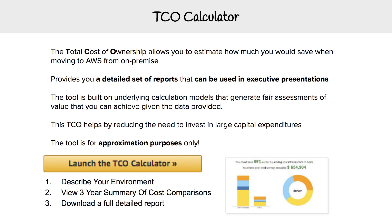Hey, this is Andrew Brown from ExamPro. We are looking at the TCO calculator, which stands for Total Cost of Ownership. This allows you to estimate how much you would save when moving to AWS from on-premise. It provides you a detailed set of reports that can be used in executive presentations.